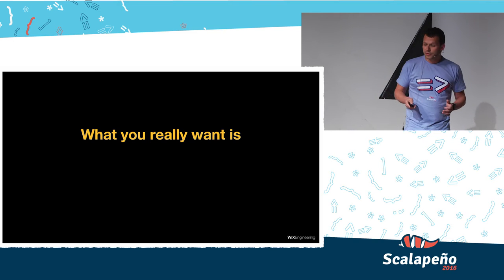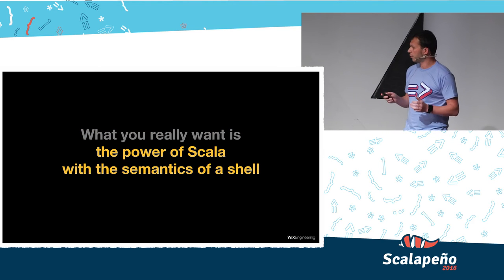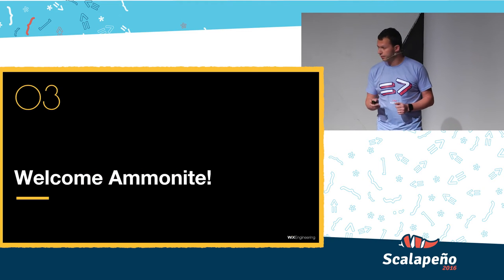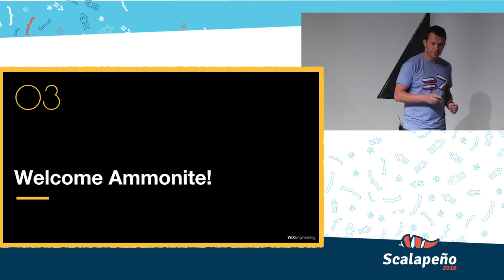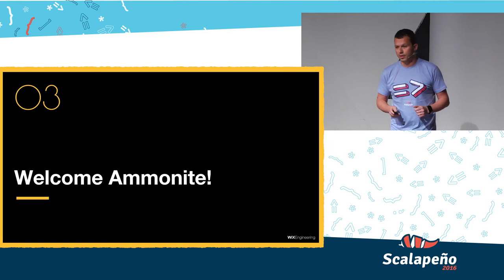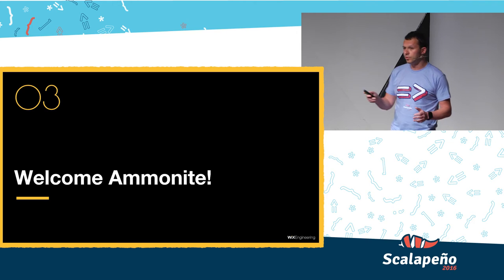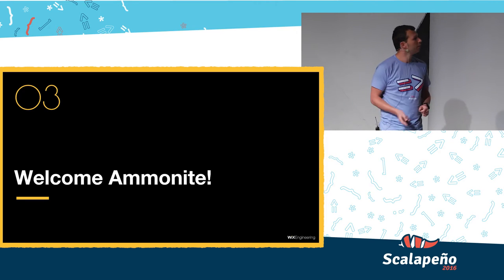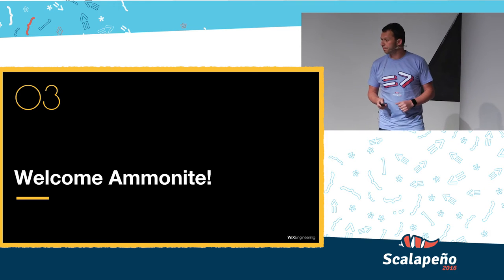What you really want is the power of Scala with the semantics of a shell. For this, welcome Ammonite. Ammonite is a combination of a better Scala REPL and a shell-like operations library, so you can use it as a system shell or for scripting. Let's try it and see some examples.